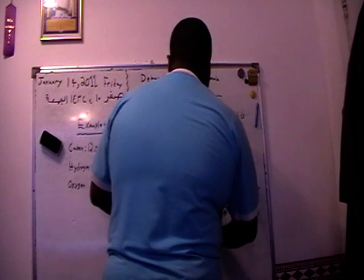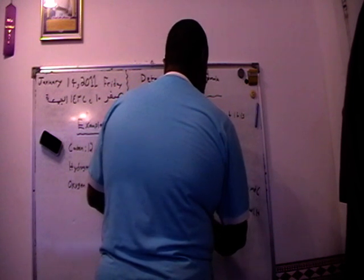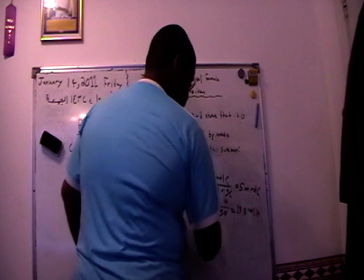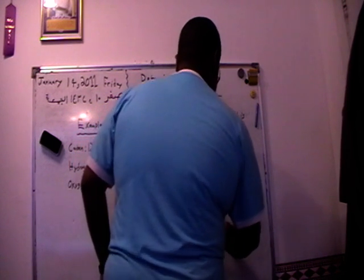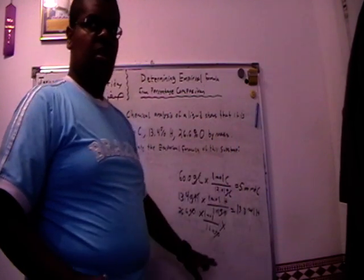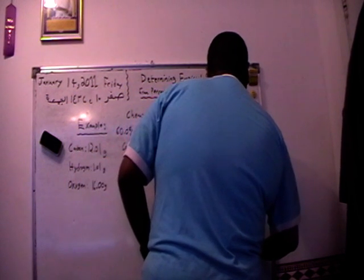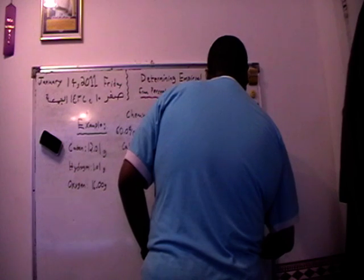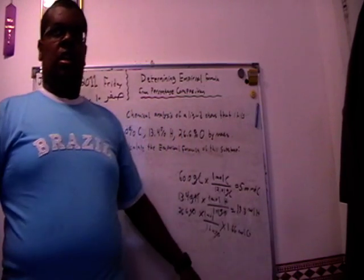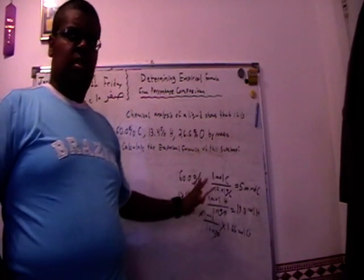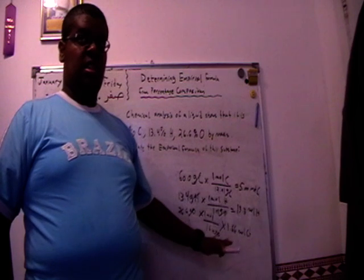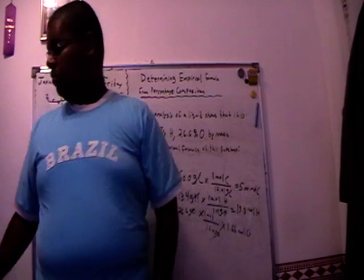Now oxygen: 26.6 grams of oxygen times one mole over the average atomic mass from the periodic table which is 16.00 grams of oxygen. Cross those out and that will equal 1.66 mole of oxygen. And don't forget to cross these out—that's a big mistake.